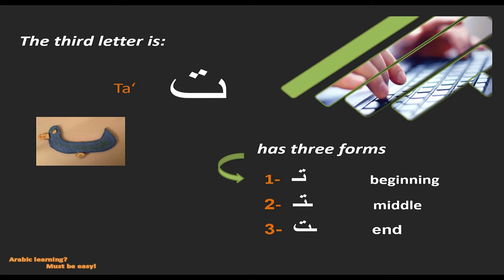As we learned in the last video, the letters have different forms. The letter Ta also has three forms: as it's written at the beginning of the word, in the middle, or at the end of the word. There is an exception for the second and third form, as in the last lecture — it may be that the letters are in the middle or end of the word and still don't have the original form. We will see this in the following examples.